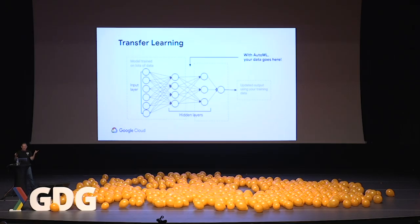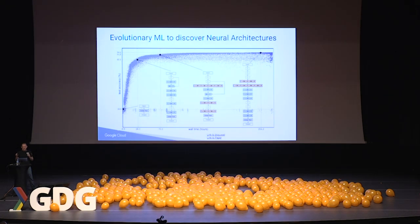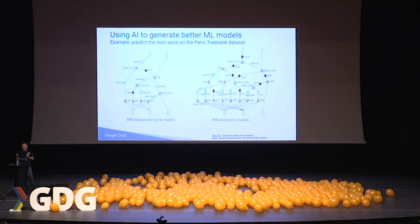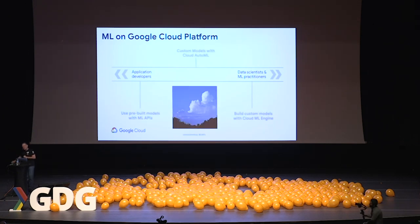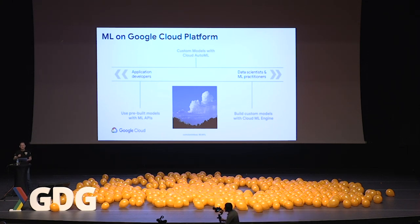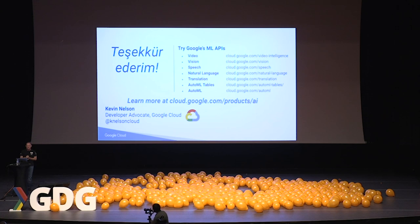I've got some more slides I'm not going to be able to discuss. To summarize: you can use pre-built models, you can do hand-built models, and now with AutoML you can do that without having to become an expert. There are some links you can use to learn more about these subjects, and I'll be hanging around for the rest of the afternoon — so I look forward to talking to anybody who has additional questions. Thank you very much.